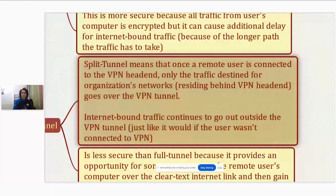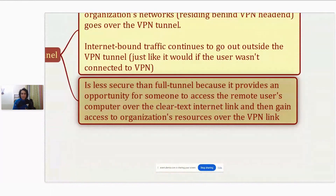Split tunnel means that once the remote user is connected, only traffic destined for the organization's networks behind the VPN head end goes over the VPN tunnel. Internet-bound traffic continues to go outside the VPN tunnel, just as it would if the user were not connected to VPN. It is less secure than full tunnel because it provides an opportunity for someone to access the remote user's computer over the clear text internet link and then gain access to organization resources over the VPN link. However, split tunnel is still a commonly used option.